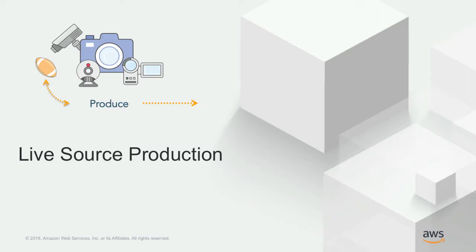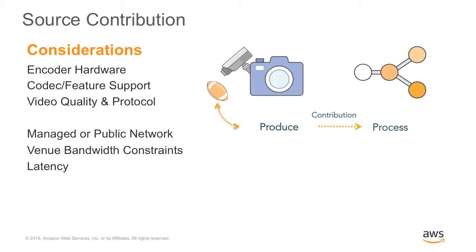In a live production workflow, you need to consider what encoder hardware you're going to use on-premises to push that signal into the cloud. You need to pay attention to video quality and latency. Are you on a managed network or a public network? Early on, the same Wi-Fi used by attendees at an event would be used to publish video, which caused a lot of problems. You have to be aware of bandwidth constraints.